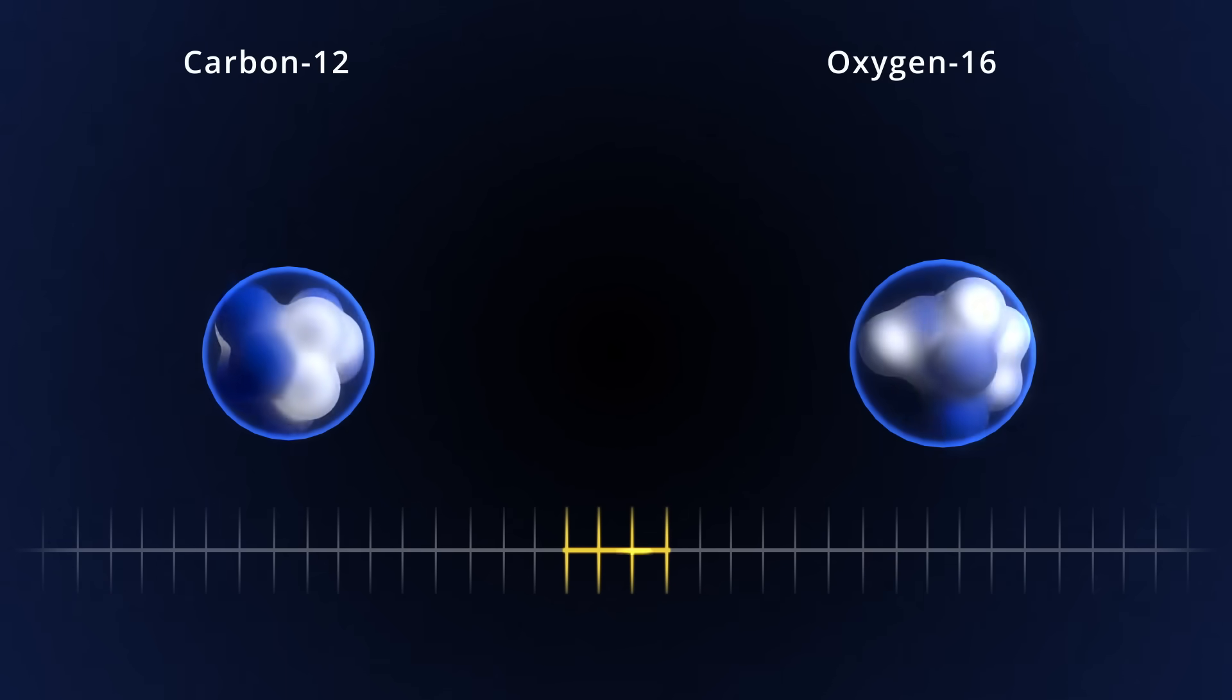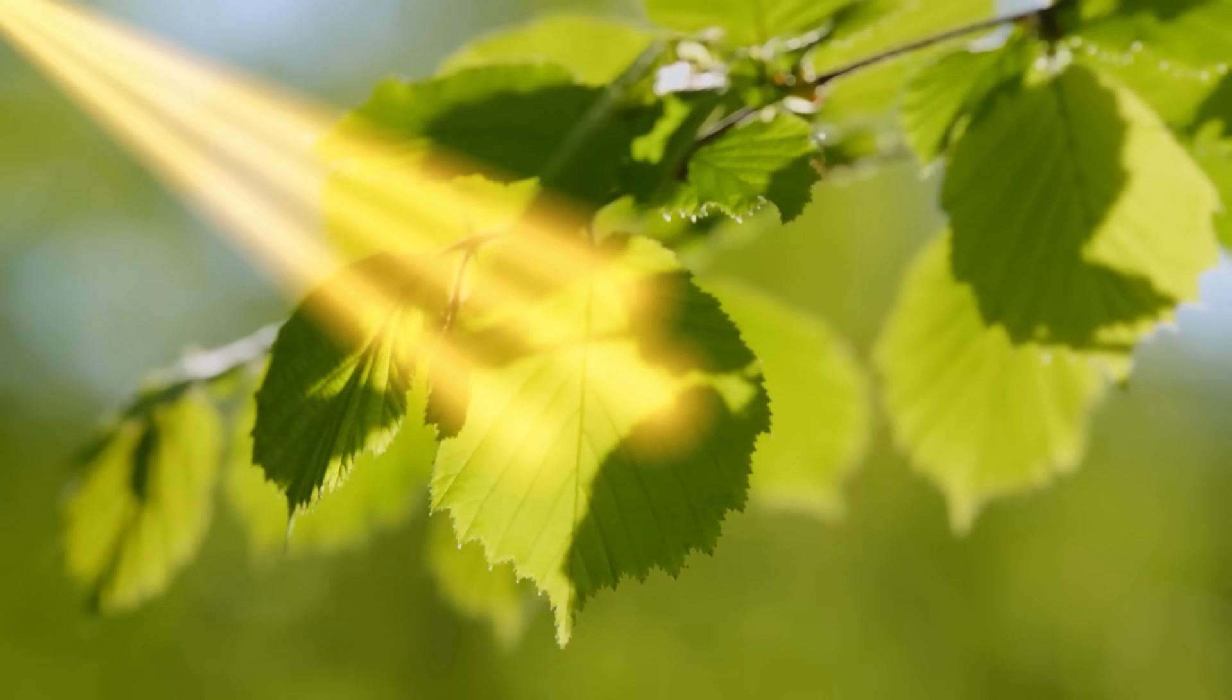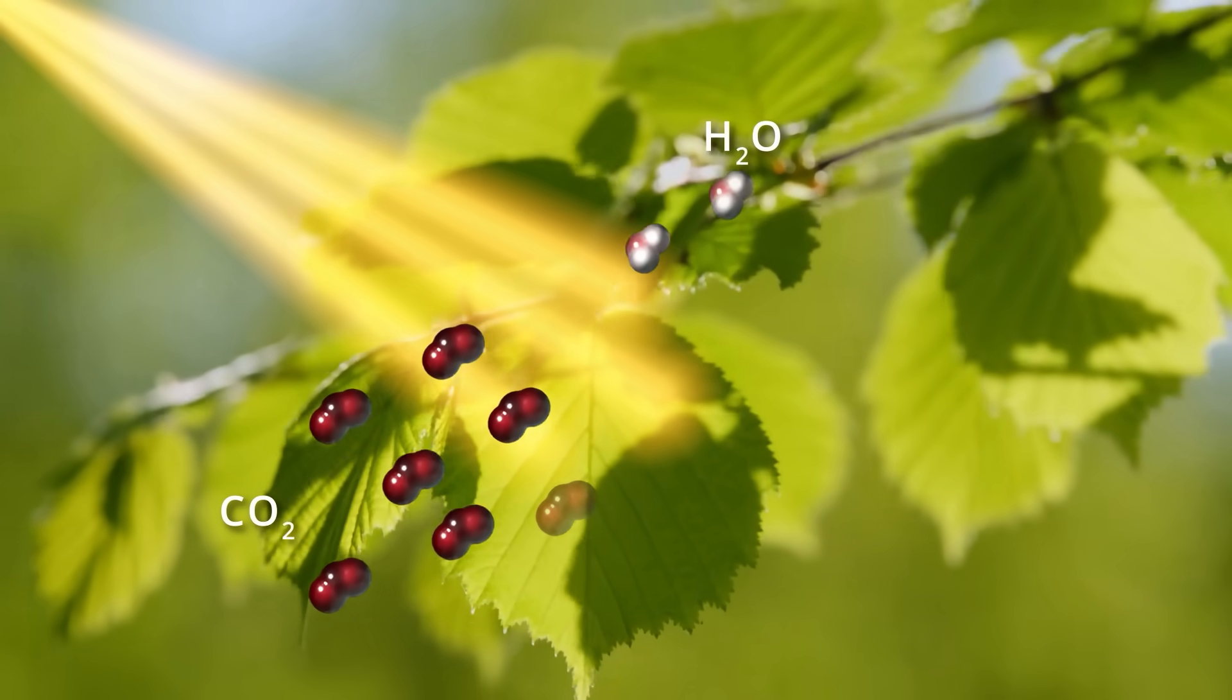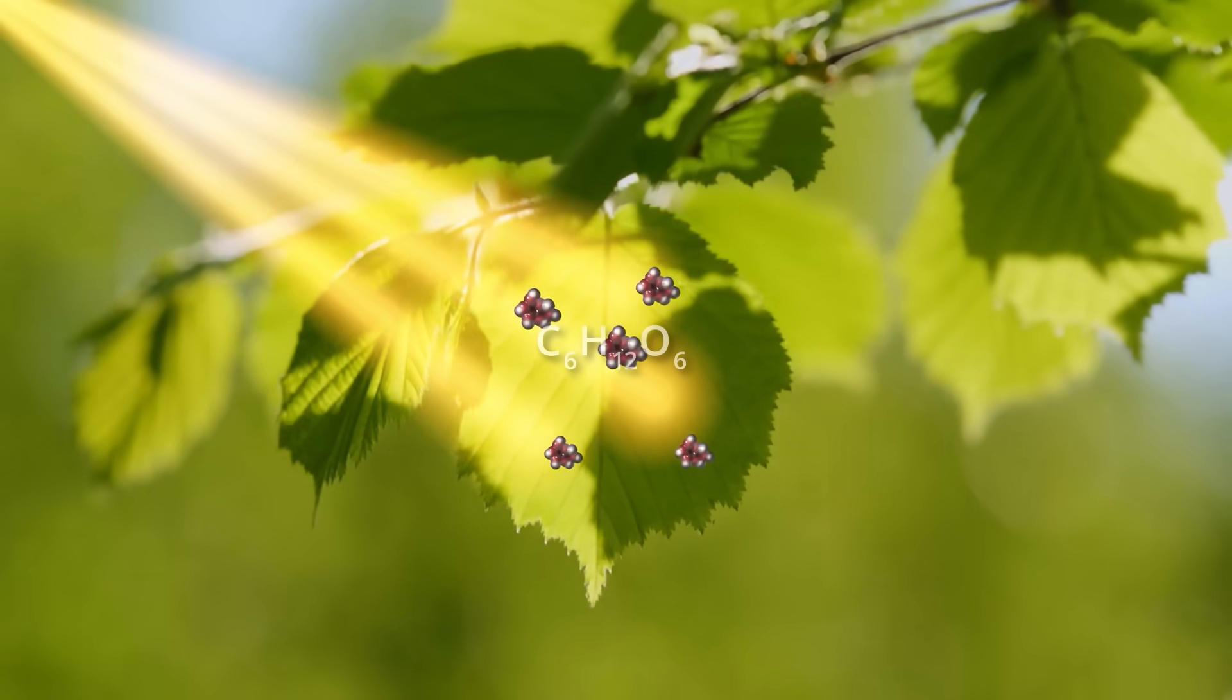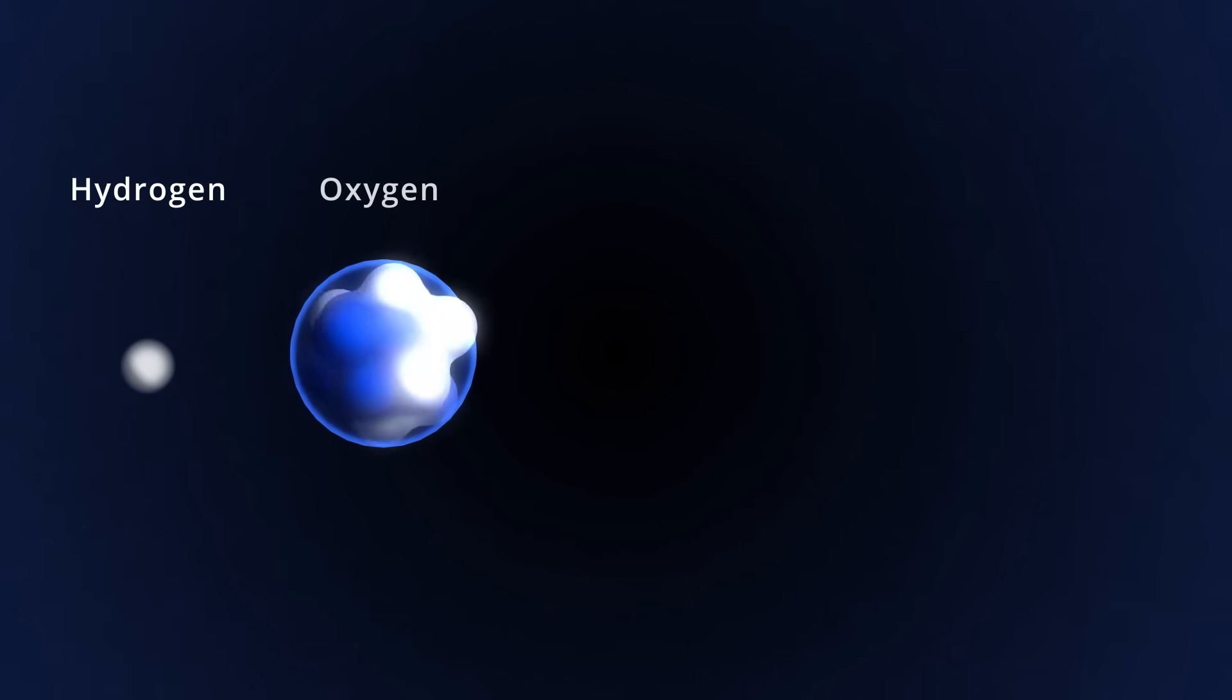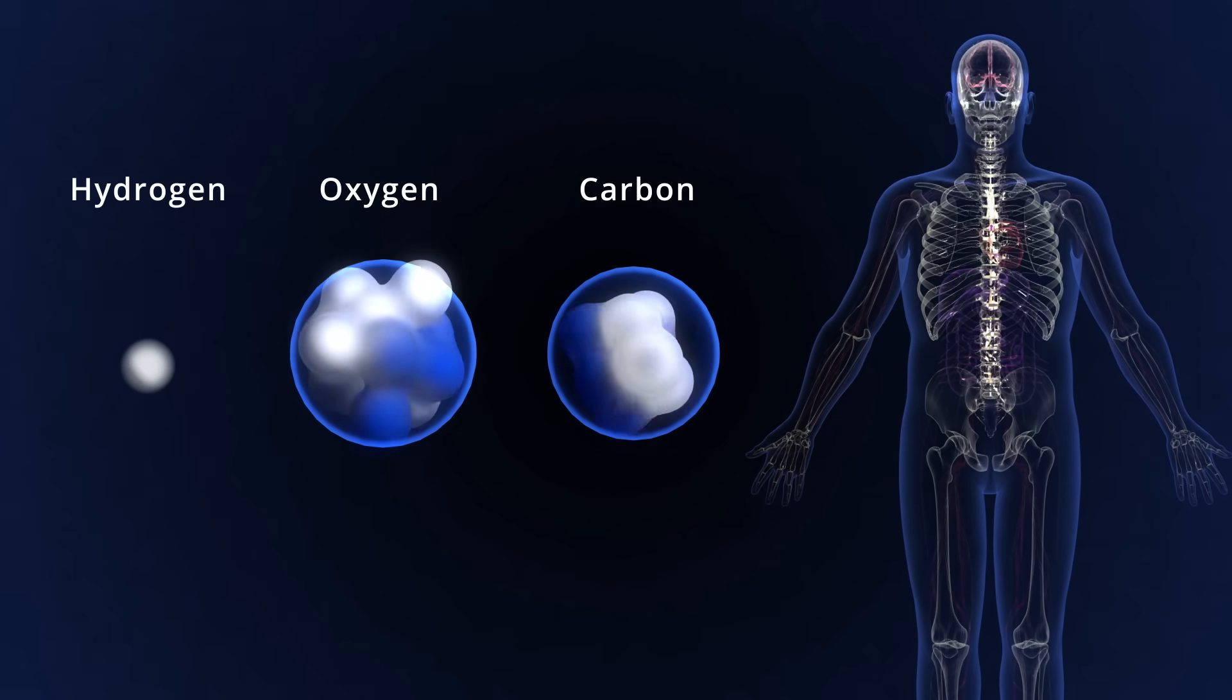Carbon-12 and oxygen-16 are crucial to life. The cornerstone of life is the chemical process in plants where sunlight converts carbon dioxide, carbon and oxygen, and water into plant food, glucose and oxygen. The elements hydrogen, oxygen, and carbon account for 93% of the mass of the human body.